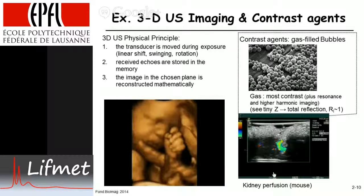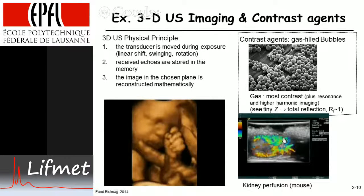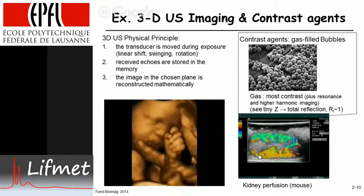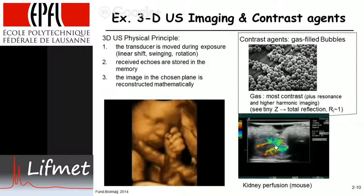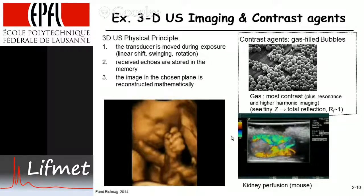Here's an example of a kidney perfusion study in the mouse. You're going to see the injection of the contrast agent, and the signal that appears is color-coded. You can see very nicely the cortex of the kidney and how the contrast agent in the blood through the circulation ends up in the cortex of the kidney.